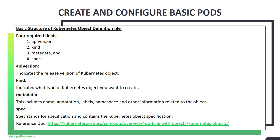The first one is the API version, which indicates the release version of the Kubernetes object. The second one is kind, which indicates what type of Kubernetes object you want to create. The third one is object metadata, which includes name, annotation, labels, namespace, and other information related to the Kubernetes object. The last one is spec, which stands for specification and contains the object specification.